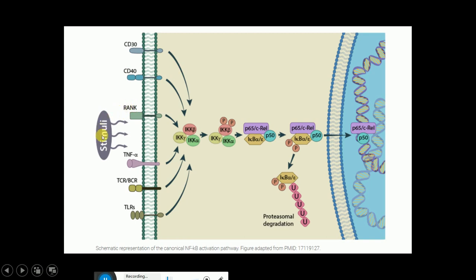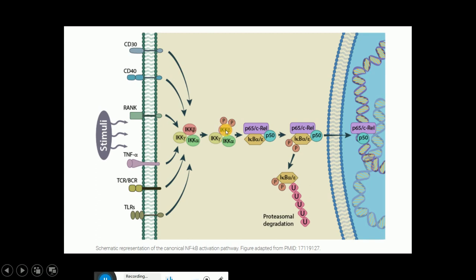Different stimuli bind to their corresponding receptors on the cell membrane, and then they activate the IKK complex in the cytoplasm. This activation results in the phosphorylation of IKKβ of the IKK complex, triggered by the binding of these stimuli to their corresponding receptors.